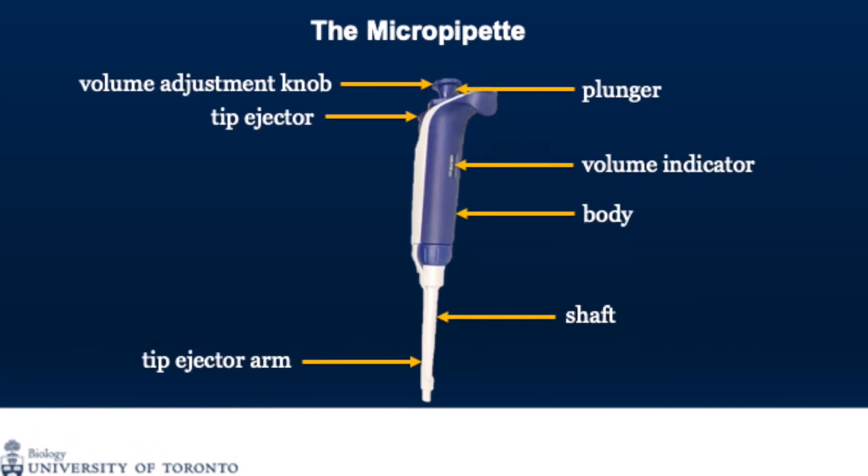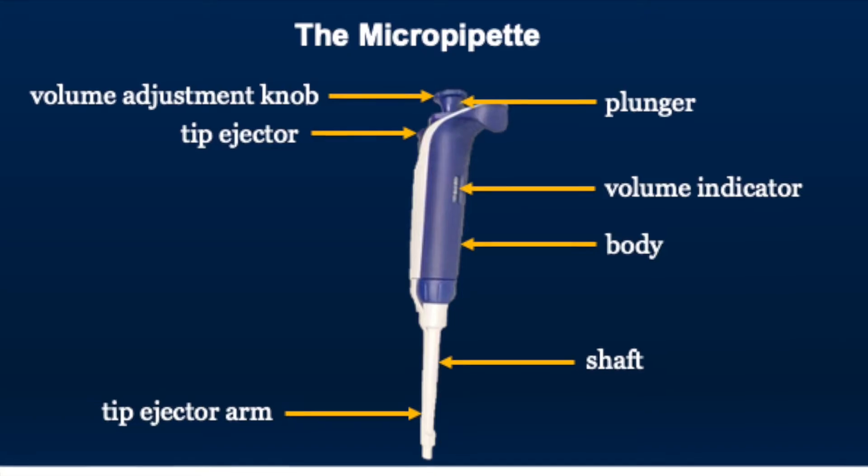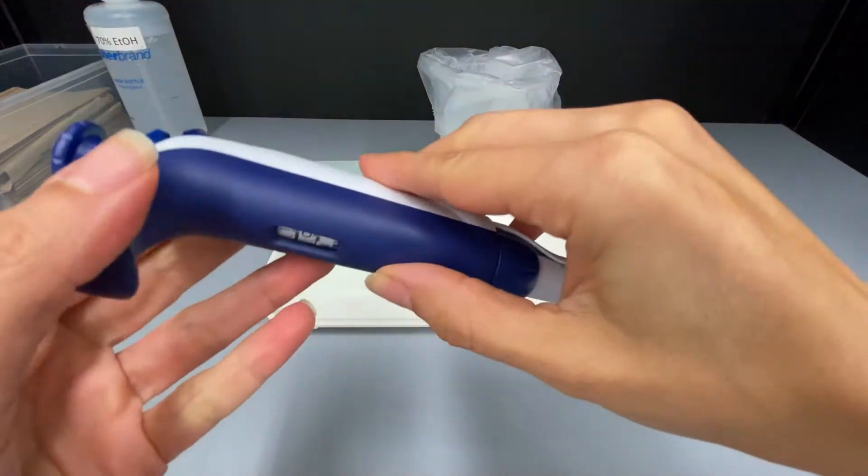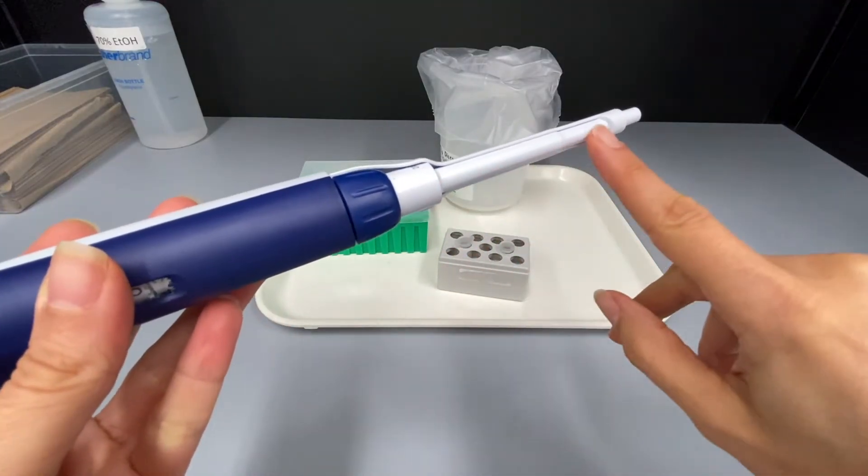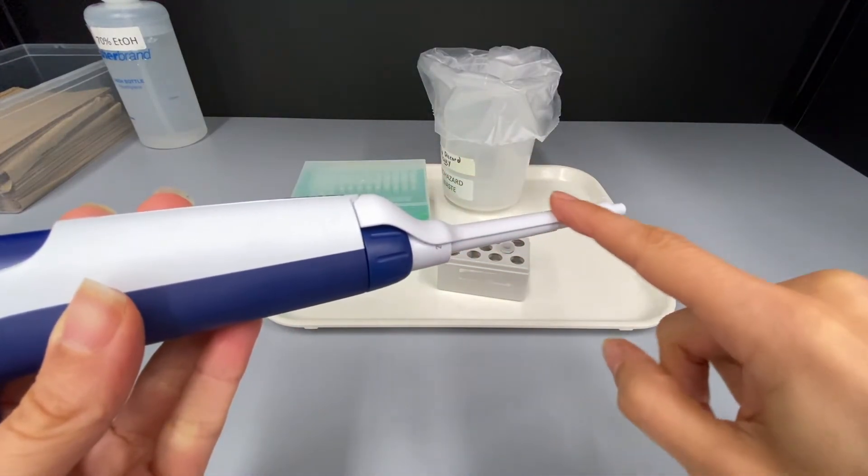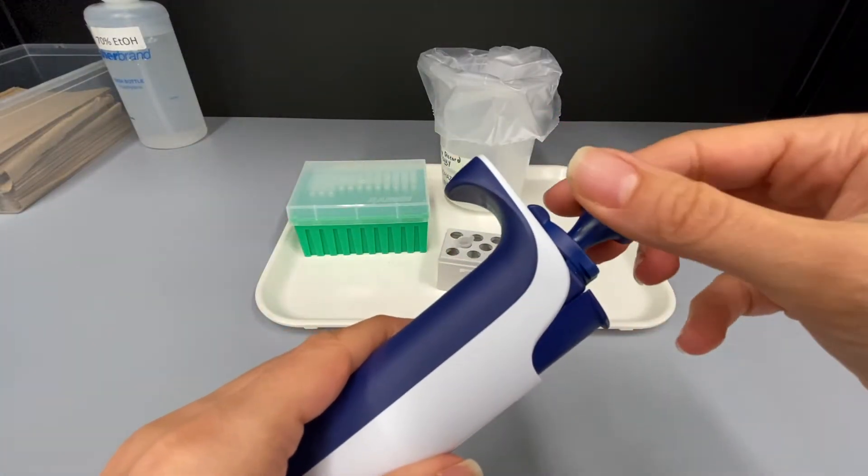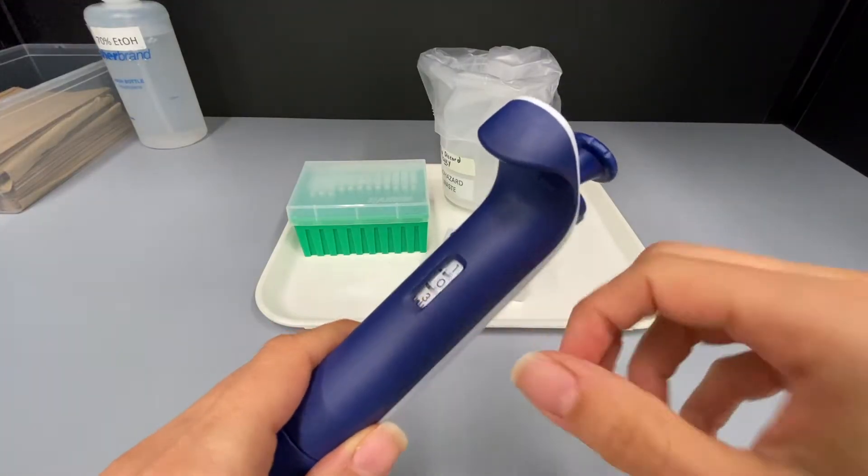Let's start by familiarizing ourselves with a micropipette. The micropipette consists of the body, the shaft, the tip ejector arm, the plunger, the volume adjustment knob, the volume indicator, and the tip ejector.